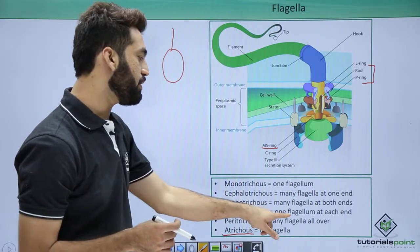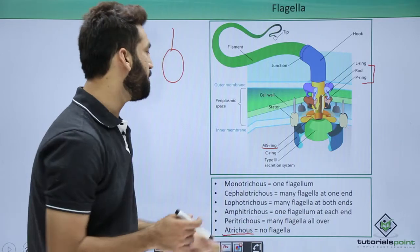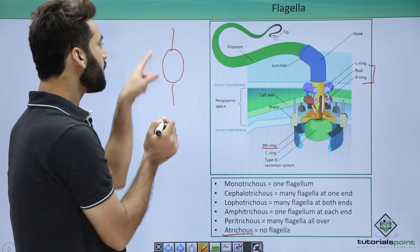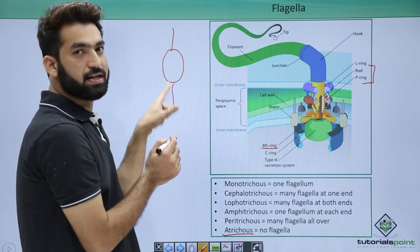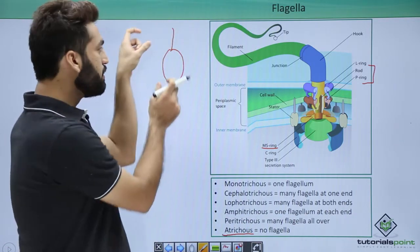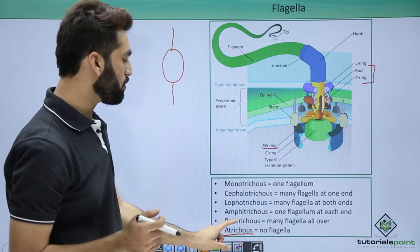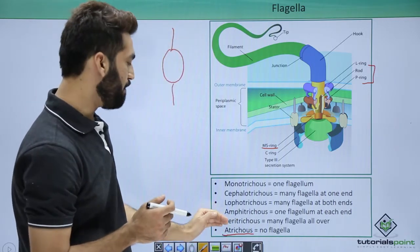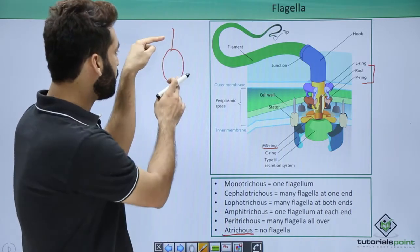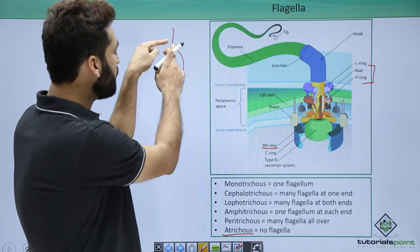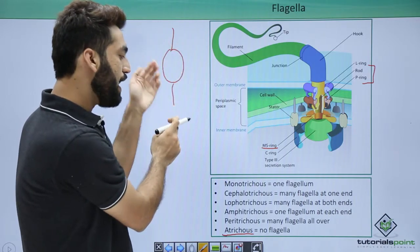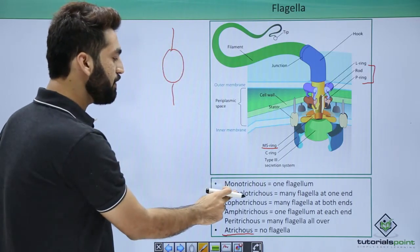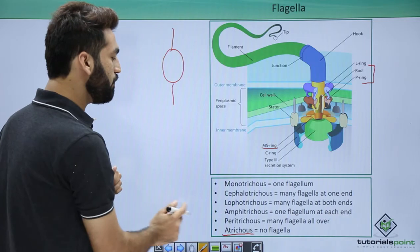In amphitrichous bacteria, there is one flagellum at each end — one flagellum at one end and another flagellum at the other end. So monotrichous means one flagellum at one end, and amphitrichous means one flagellum at each of the two ends.